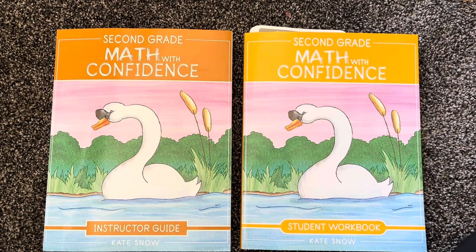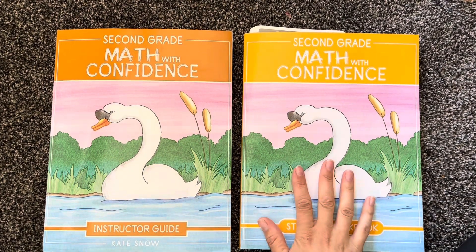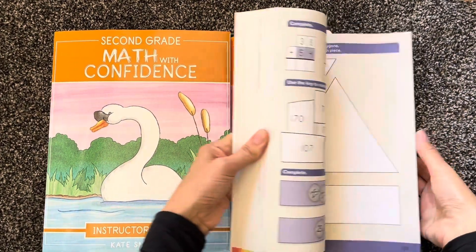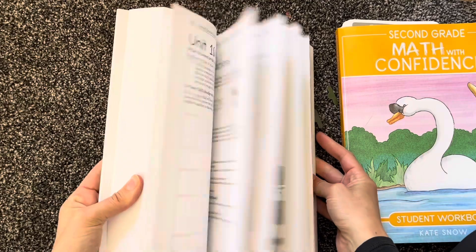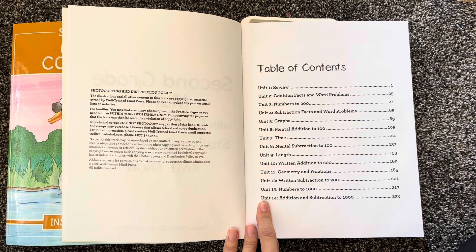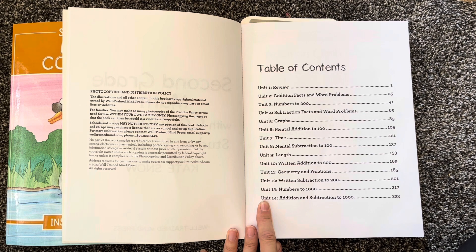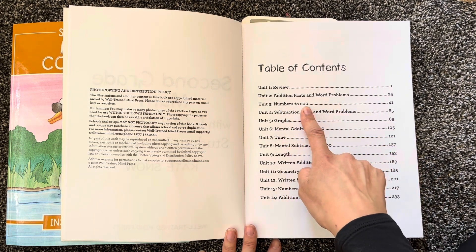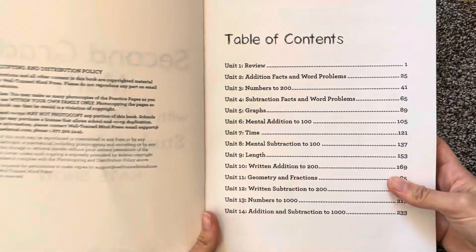Here you'll see we have the student workbook and we have the instructor's guide. The student workbook is all in color, the instructor's guide is black and white. Level 2 has 14 units here, and you can see what you'll be covering - addition facts, word problems, numbers to 200. I'll put this up for you.